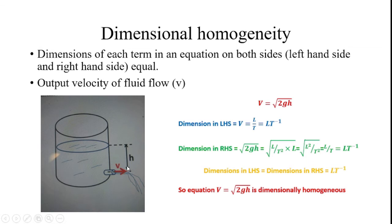From this pressure head, the output velocity can be evaluated using Bernoulli's equation. The formula is V equals the square root of 2GH. The left-hand side is V, which is velocity.